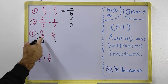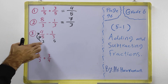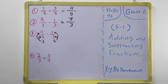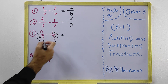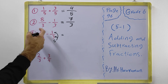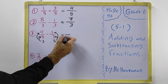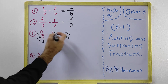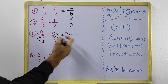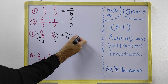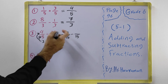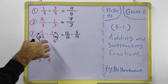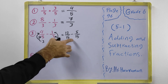For example, with 3/5 minus 1/3: this fraction has denominator 5 and the other has denominator 3, so we multiply 3/5 by 3 and 1/3 by 5. In the denominator we get 3 times 5 equals 15 for both. The numerators become 3 times 4 equals 12 and 5 times 1 equals 5. This multiplication makes the denominators the same.